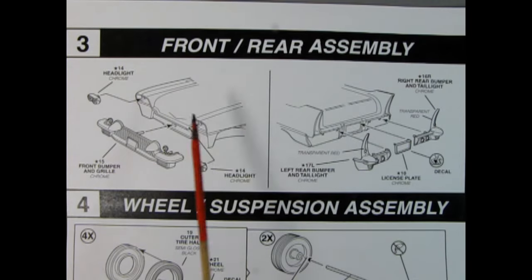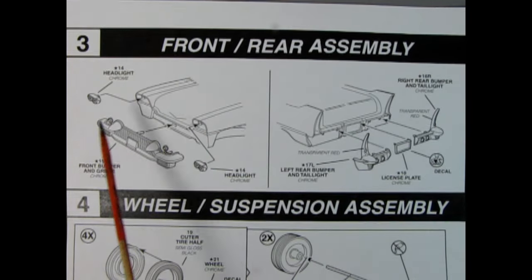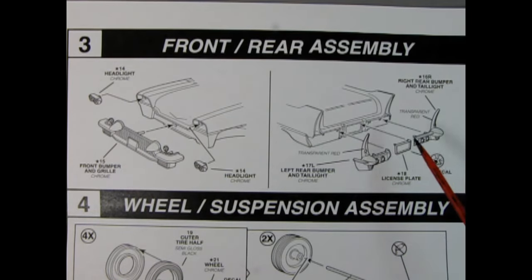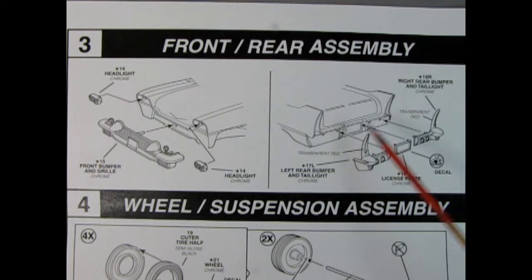Next up we have the front and rear assembly. So here we're adding our headlights in place as well as the front bumper and grille. Out back we're adding in the two back pieces of our bumper. This is a split bumper and in here are exhausts as well as rear backup lights and whatnot and you have your license plate here which we'll plug into there.